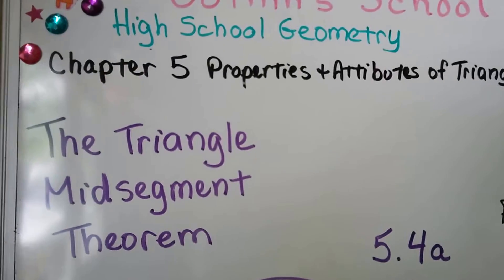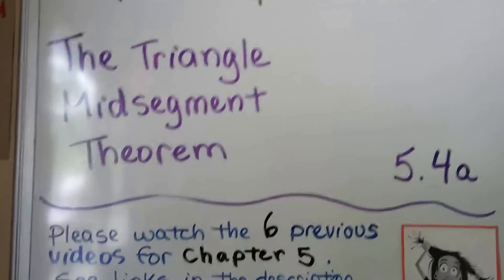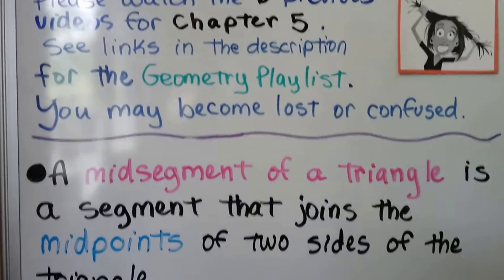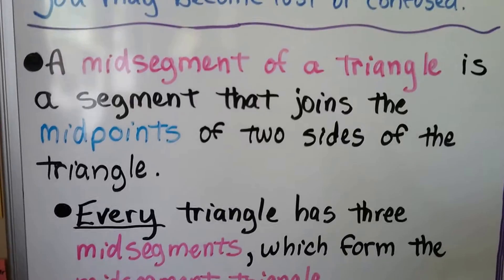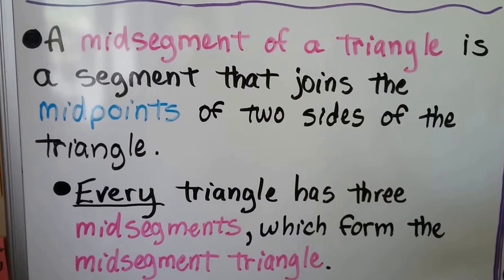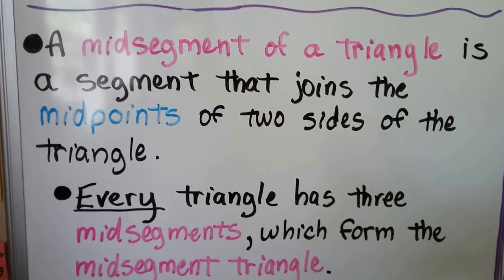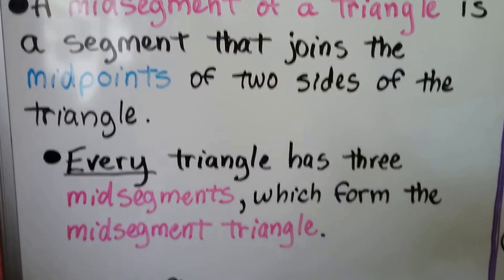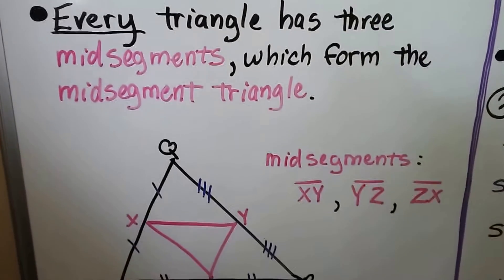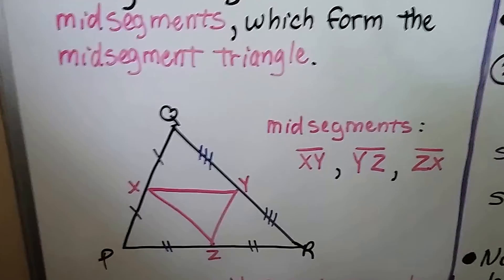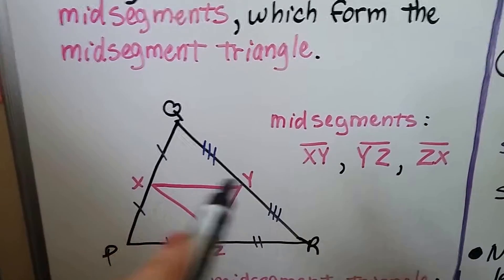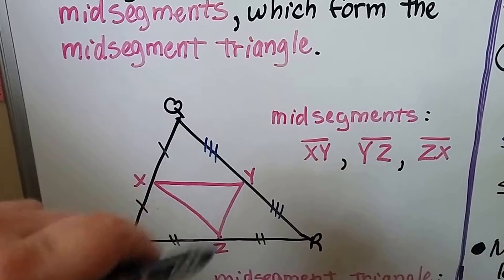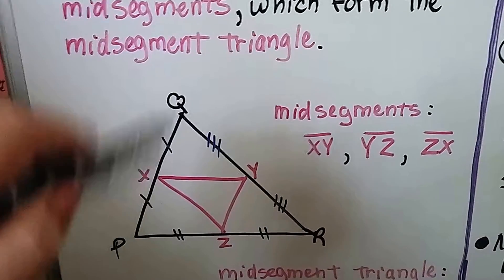The Triangle Mid-Segment Theorem. We're at 5.4a with six previous videos for Chapter 5 that are in the Geometry Playlist. A mid-segment of a triangle is a segment that joins the midpoints of two sides of the triangle. Every triangle has three mid-segments, which form the mid-segment triangle. So XY is a mid-segment and YZ is a mid-segment — it's parallel to this one.